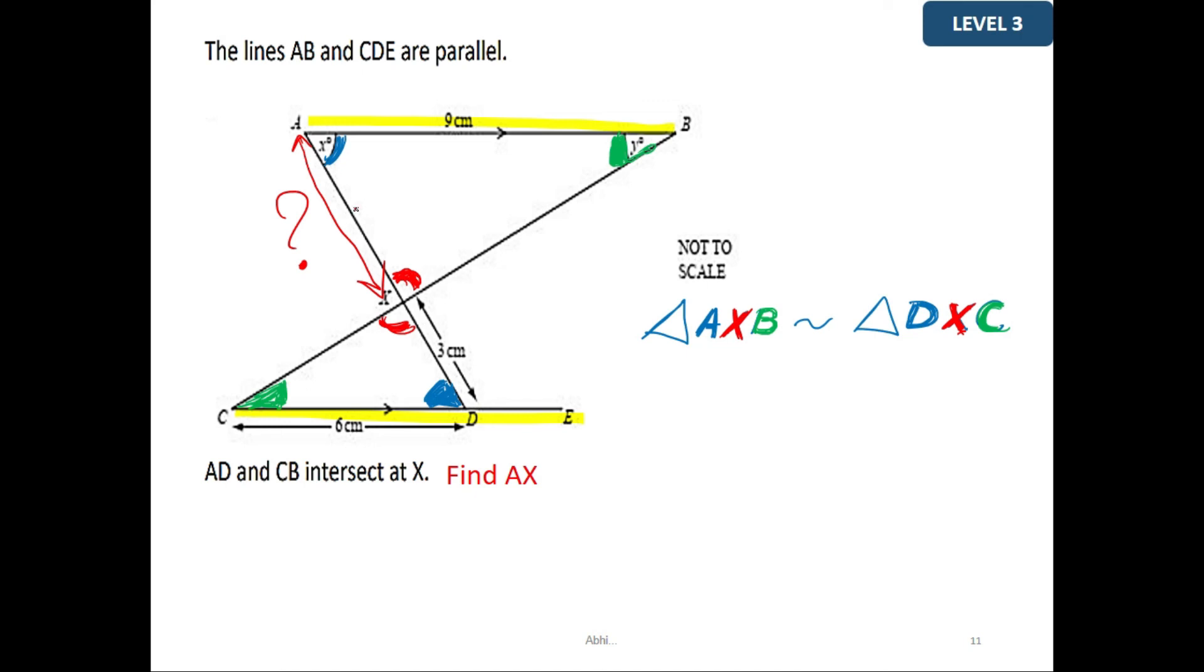Now the question is to find AX. So I will start with writing AX over the corresponding side for AX on the other triangle, which is DX. Now looking for the other two known sides, I have side AB over the corresponding side, which is DC.